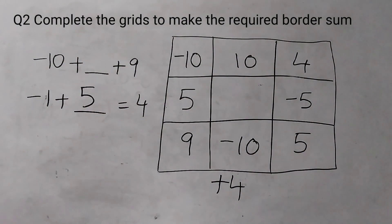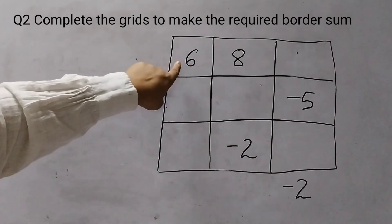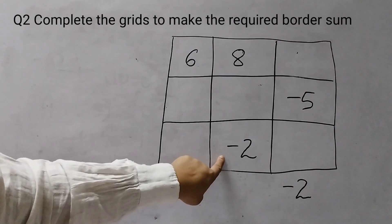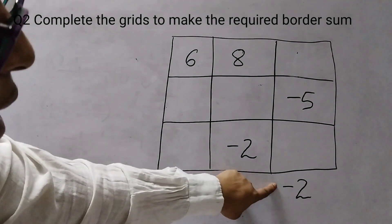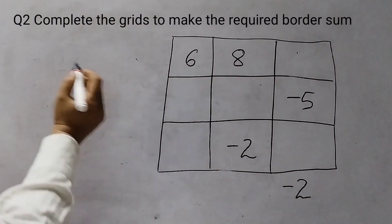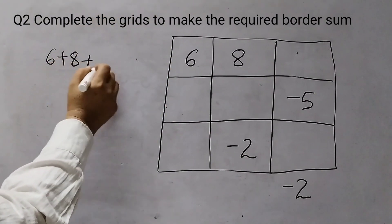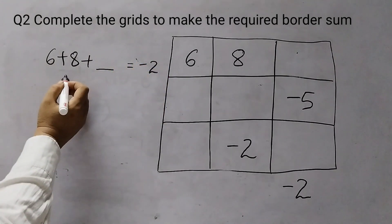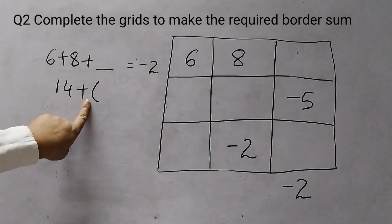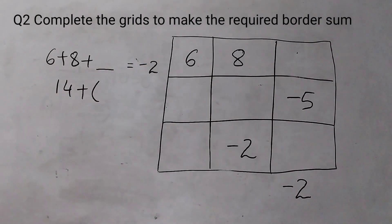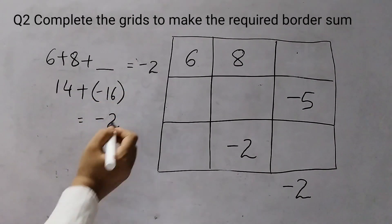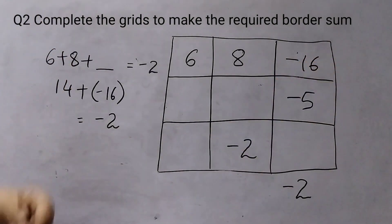Now we will be solving the second grid. In this grid the top row already has 6 and 8, the right column has minus 5, and the bottom row has minus 2. The border sum is minus 2. Starting with the top row: 6 plus 8 plus something should give minus 2. Since 6 plus 8 is 14, I need minus 16 — because 14 plus minus 16 is minus 2. So this is minus 16.